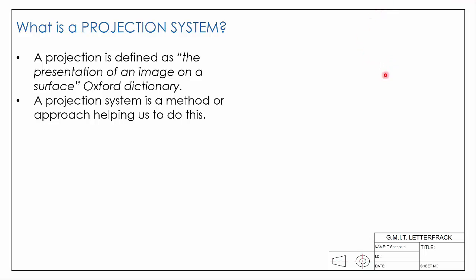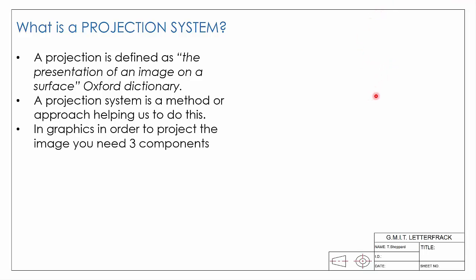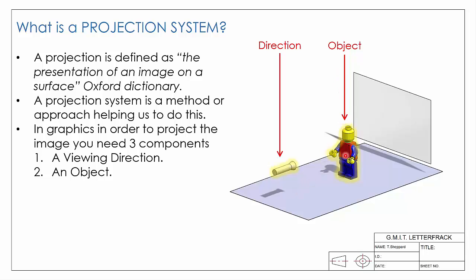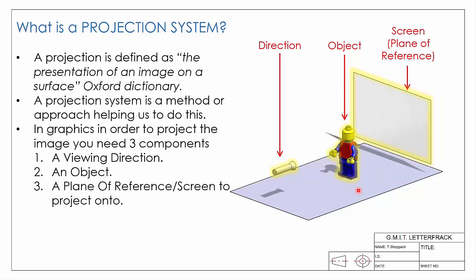When it comes to the projection systems we're going to be dealing with, we have three basic components, each of which we can see in our example. The first is a viewing direction, here represented by a torch — a torch shines light in a particular direction. The second component is an object we want to represent, here our little Lego man, and the third is a screen — the graphical term for that is a plane of reference. There are different types of projection systems we can use, and we'll look at two in particular: perspective projection and orthographic projection, but they all involve the same three basic components.